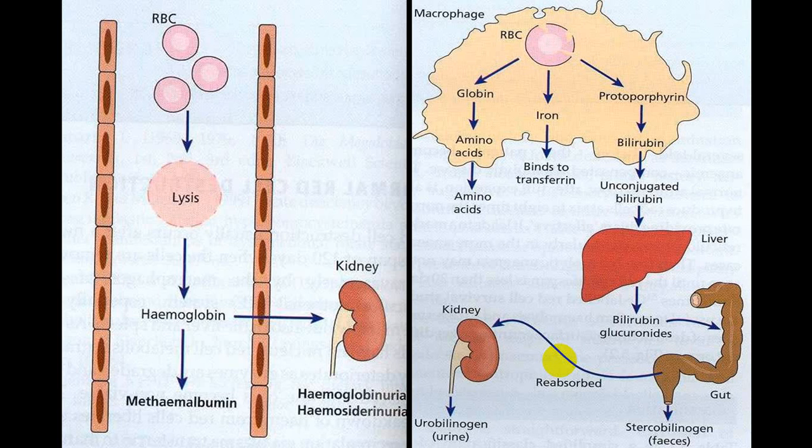When RBC is destroyed intravascularly, and when RBC are destroyed in the reticuloendothelial system, bilirubin is produced. This bilirubin is converted into conjugated bilirubin, which appears in stool where it is converted to stercobilinogen. A small quantity of stercobilinogen is reabsorbed and appears in urine as urobilinogen. In a normal person, urobilinogen is usually absent.